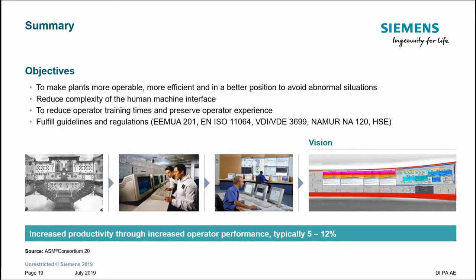To summarize, the APG library can reduce errors by decreasing the amount of complexity and confusion on your plant. It does this by making it easier to navigate and providing operators support in their tasks. One of the biggest benefits is that the ASM Consortium has shown it improves operator performance between 5 and 12 percent, which can give you a significant competitive advantage. I'd now like to hand over to Dave for a live demonstration.